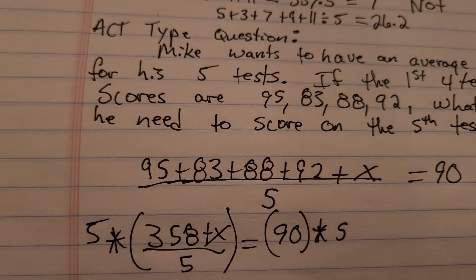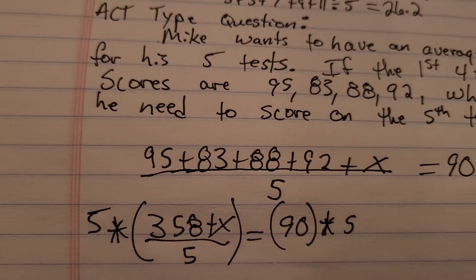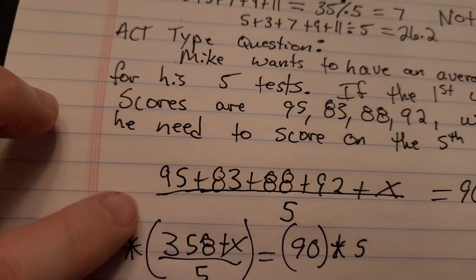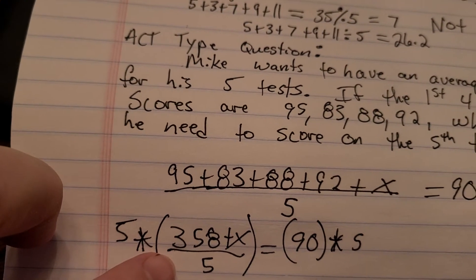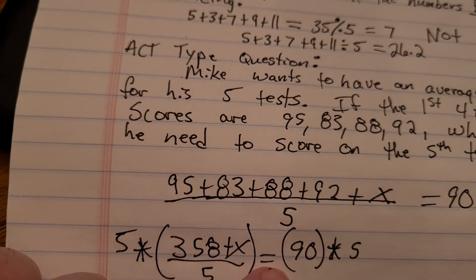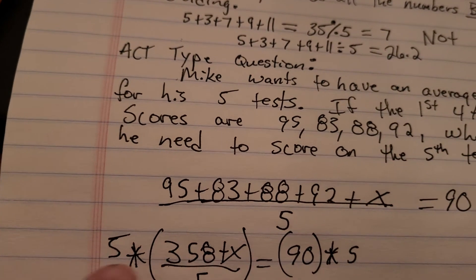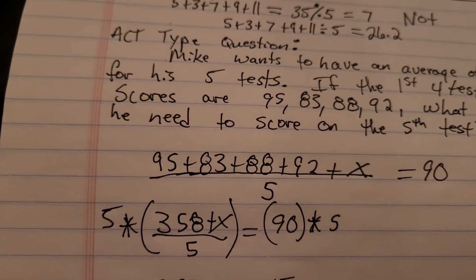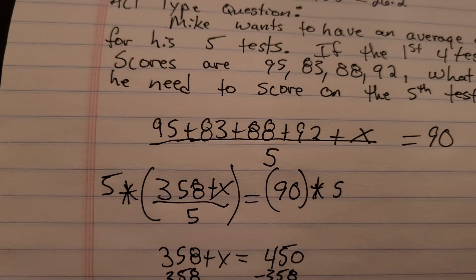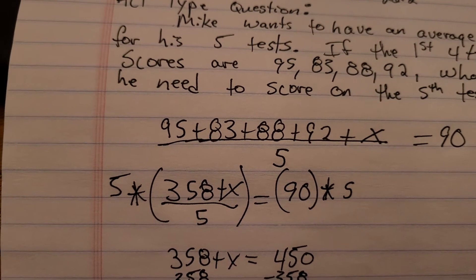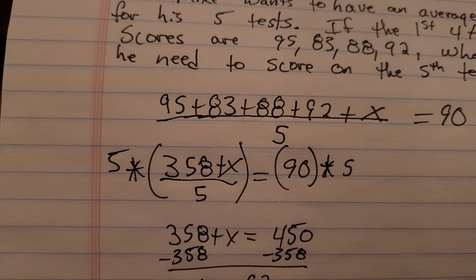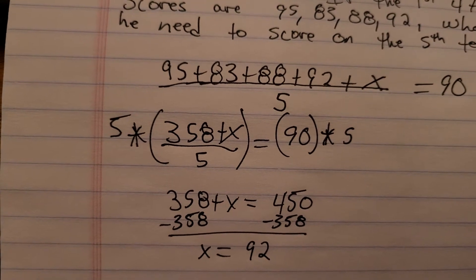So I added those numbers together, and I got 358. So I have 358 plus x divided by 5 equals 90, and then we multiply by 5 to start isolating the x, and we get 358 plus x equals 450. And you subtract 358 from both sides, and you would get x equals 92.